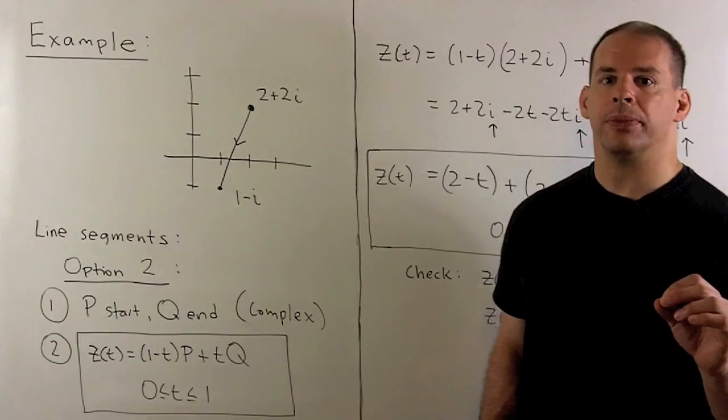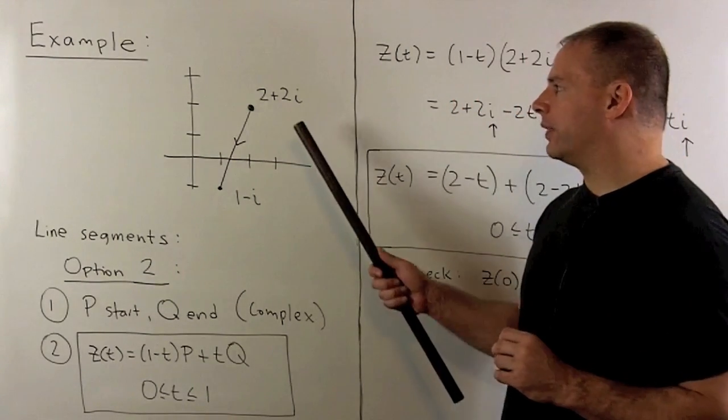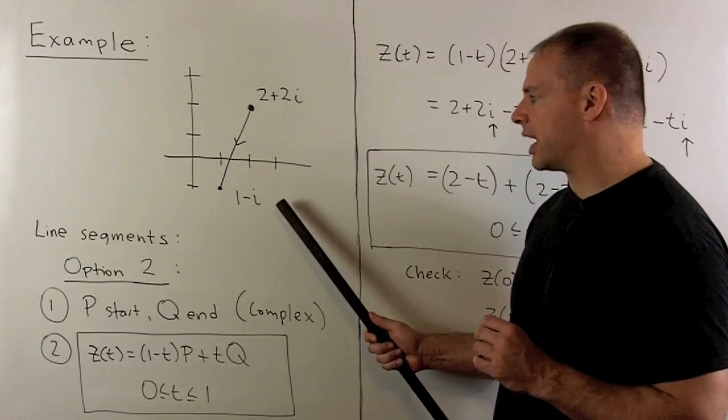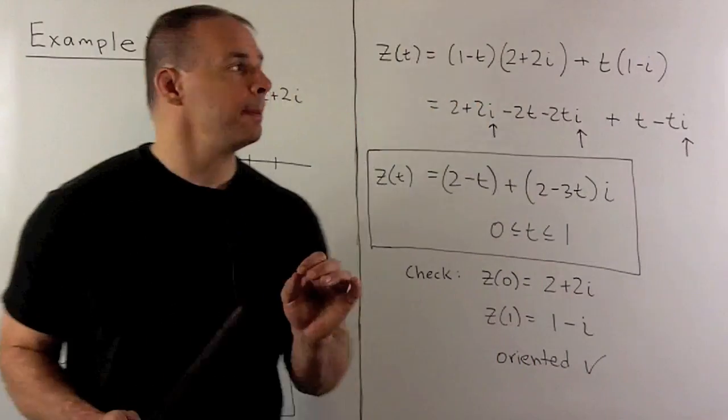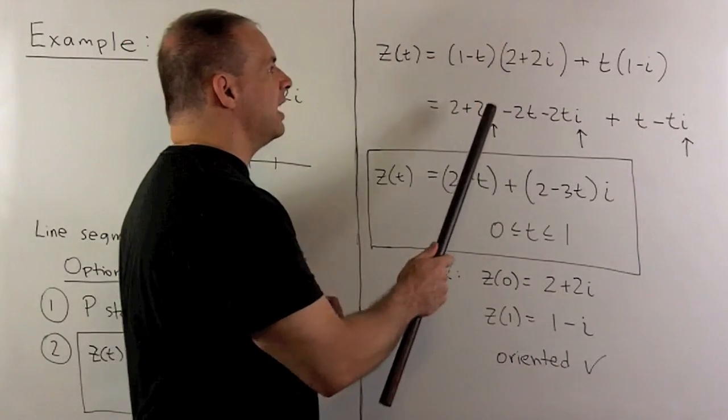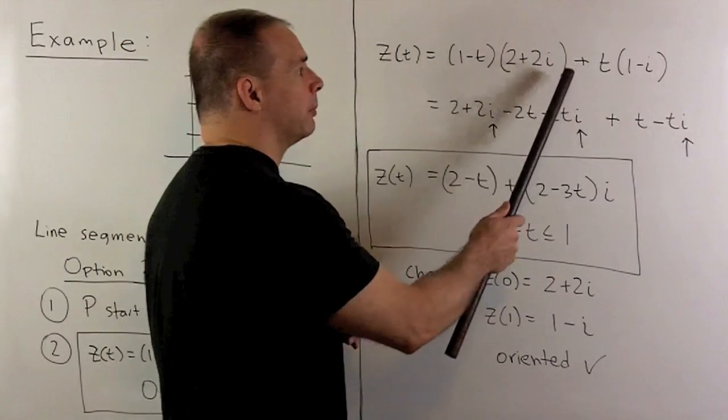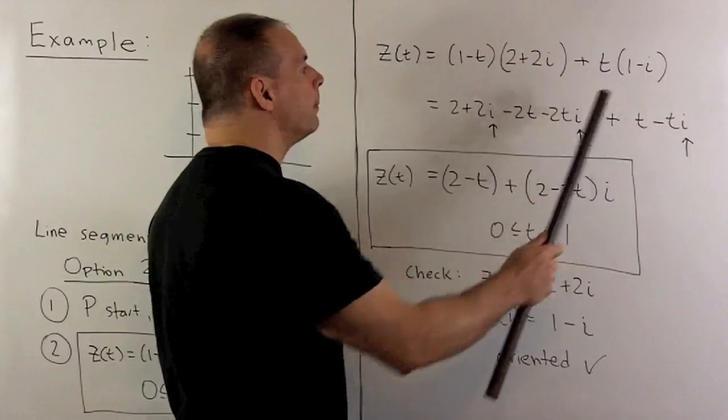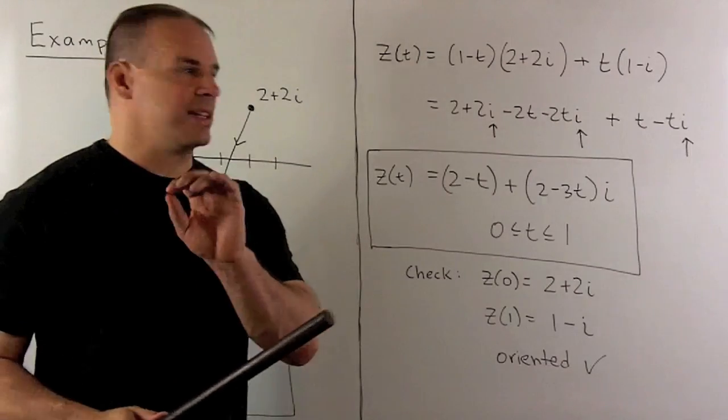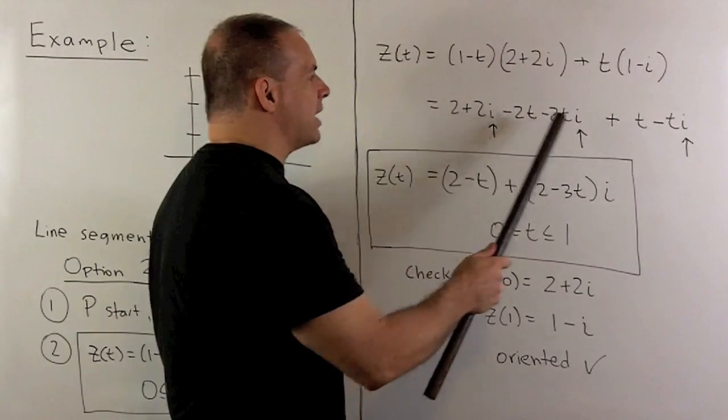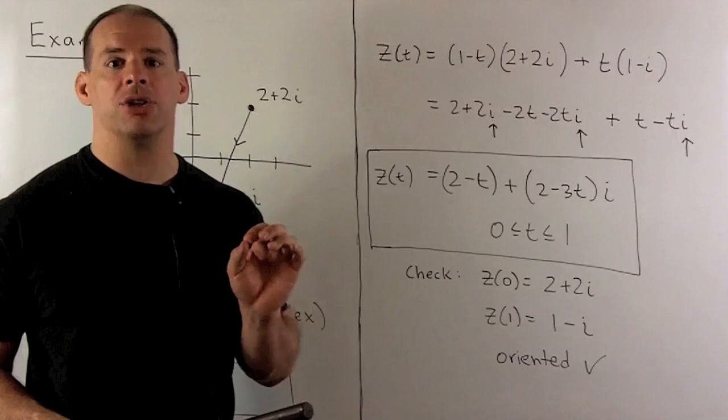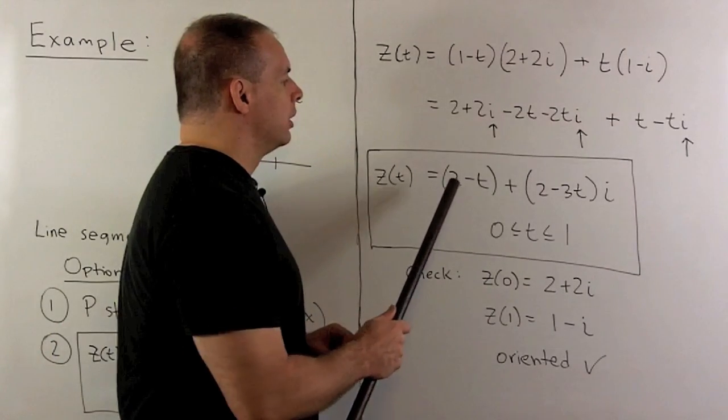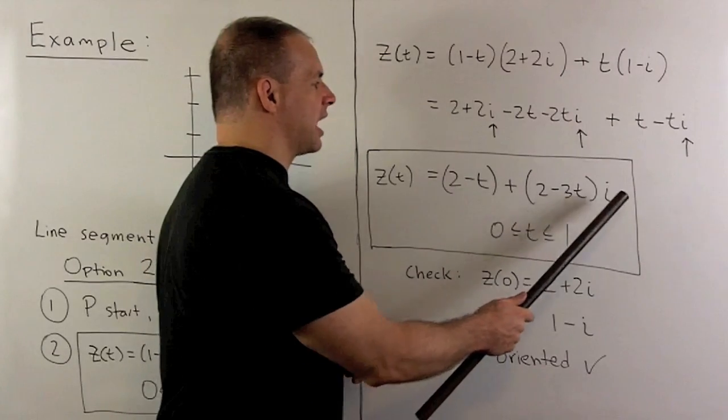Let's check our example. So, in this case, we start with the complex number 2 plus 2i. We're going to end at the number 1 minus i. So, we use our formula. It's going to give me 1 minus t times 2 plus 2i plus t times 1 minus i. So, I expand all this out. To condense things, I want to identify where the i's are. So, I can separate into real and imaginary parts. When I do that, I get z of t equal to 2 minus t plus 2 minus 3t times i. And then, t goes from 0 to 1.